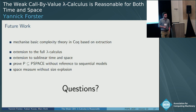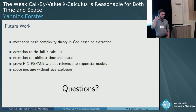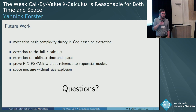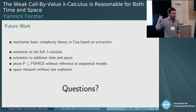Question: Can you explain the relationship to work by Blelloch, Greiner, and Narlikar on time and space for sequential and parallel complexity for call-by-value lambda calculus? Answer: We checked that work and the result does not follow from theirs. I believe they were the first to prove any result for space, but I don't recall the exact space result, so I can't compare directly. We can discuss it.